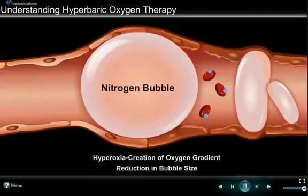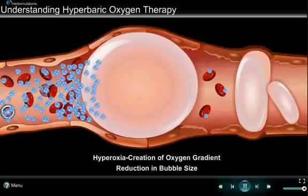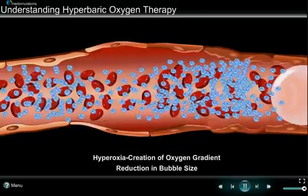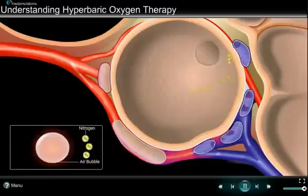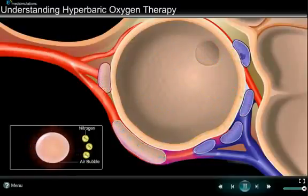Nitrogen can appear as a bubble in your blood vessels and obstruct the movement of blood and its components. Hyperbaric therapy increases the oxygen concentration in the blood vessels, forcing the nitrogen out of the bubble and effectively reducing its size. The nitrogen bubble is then eradicated from the body through the lungs during breathing. A similar effect is obtained when treating bubbles present in an air or gas embolism.